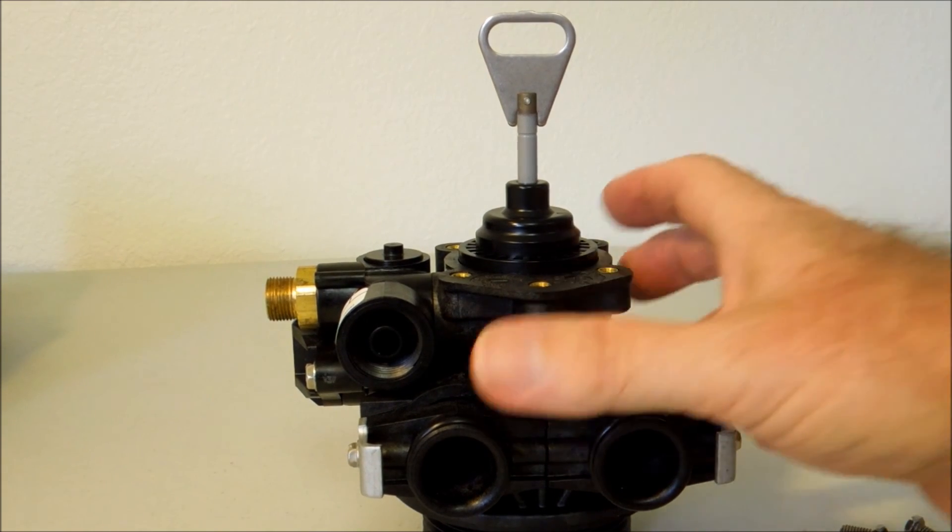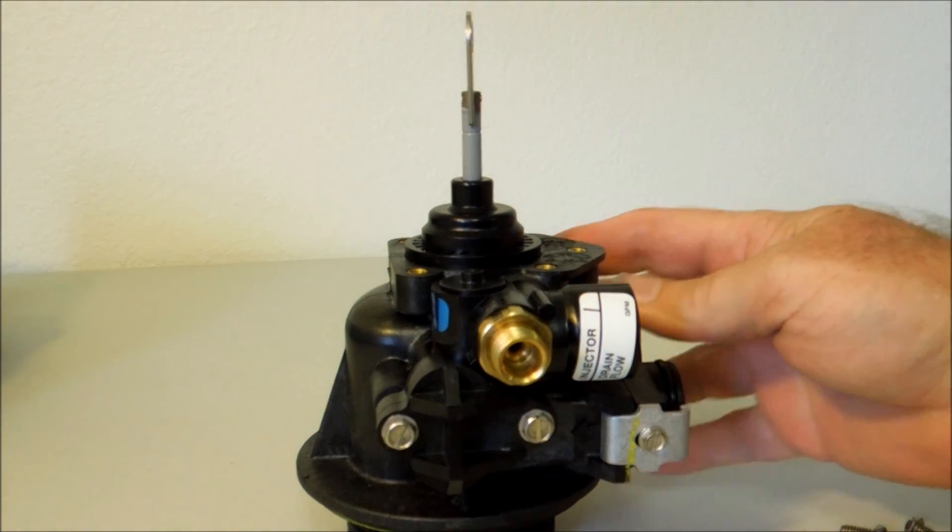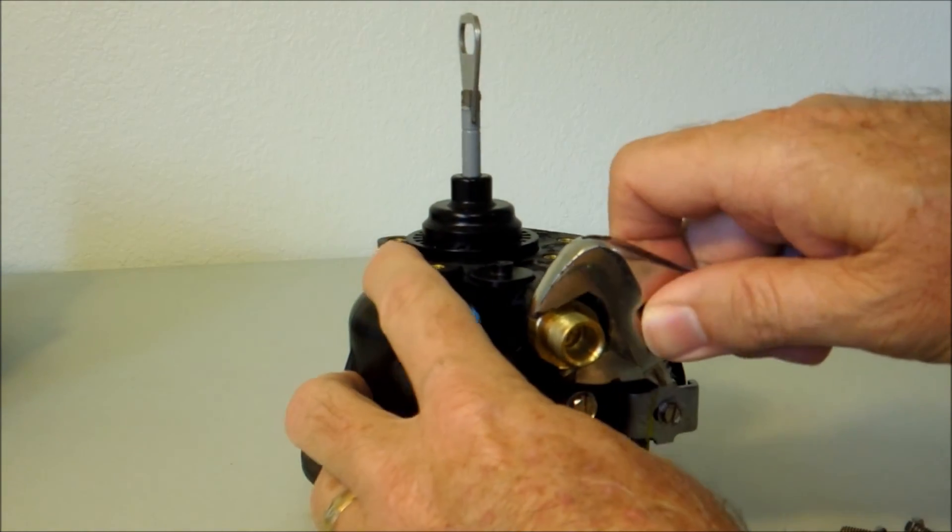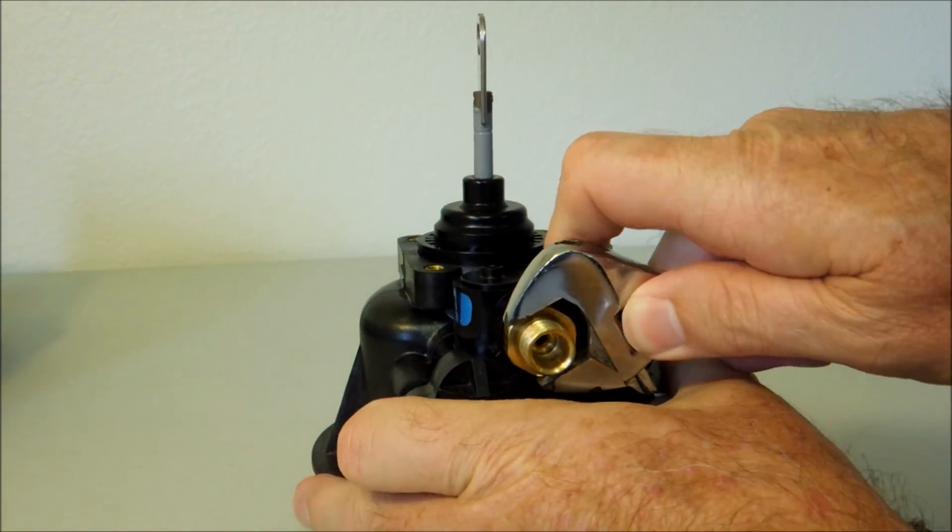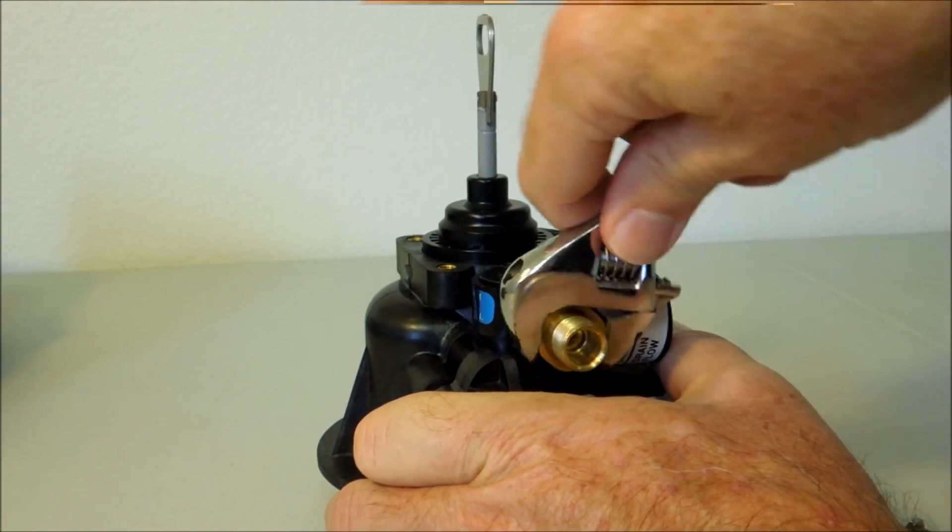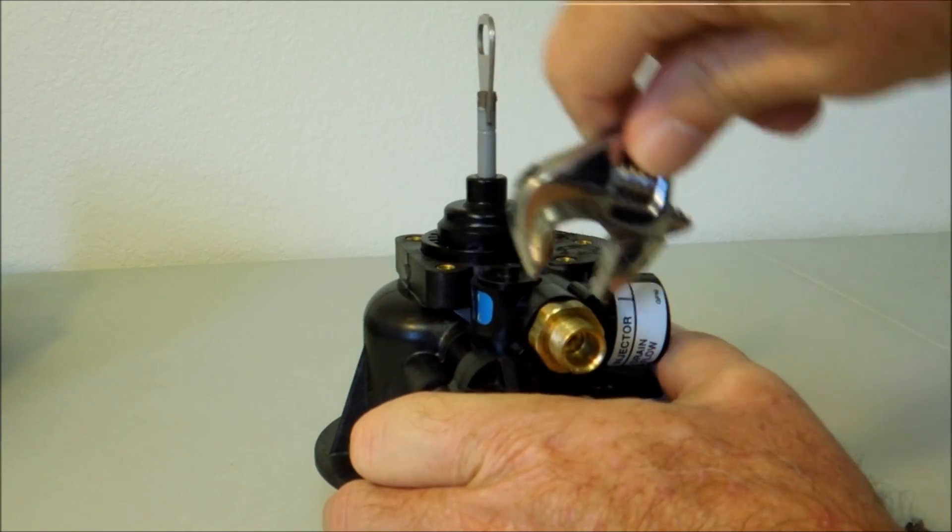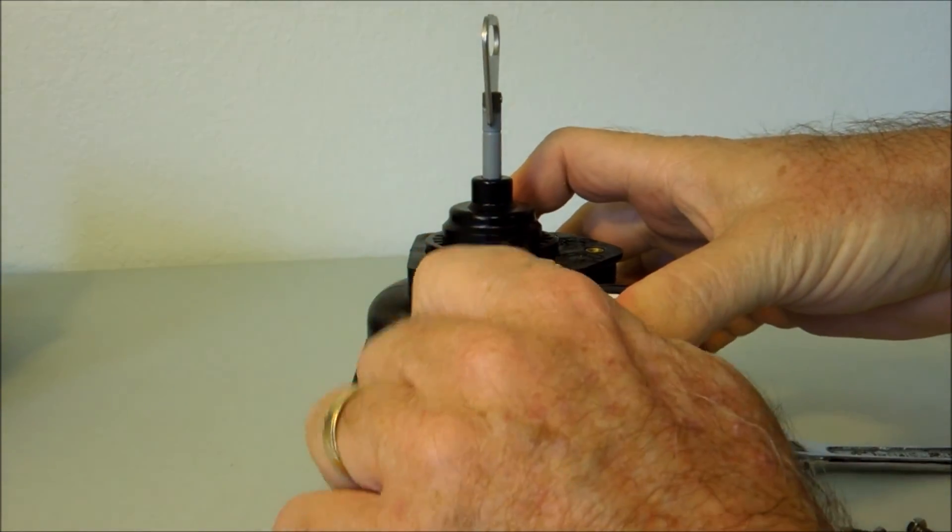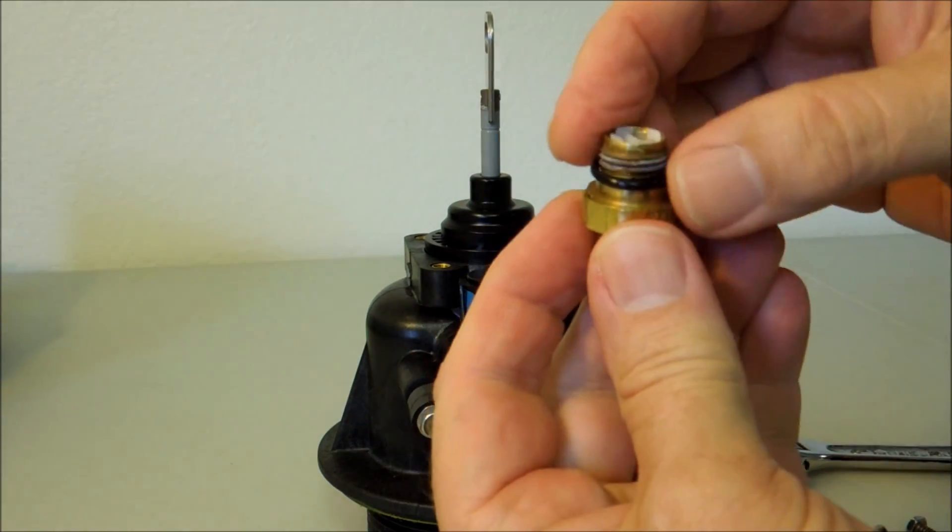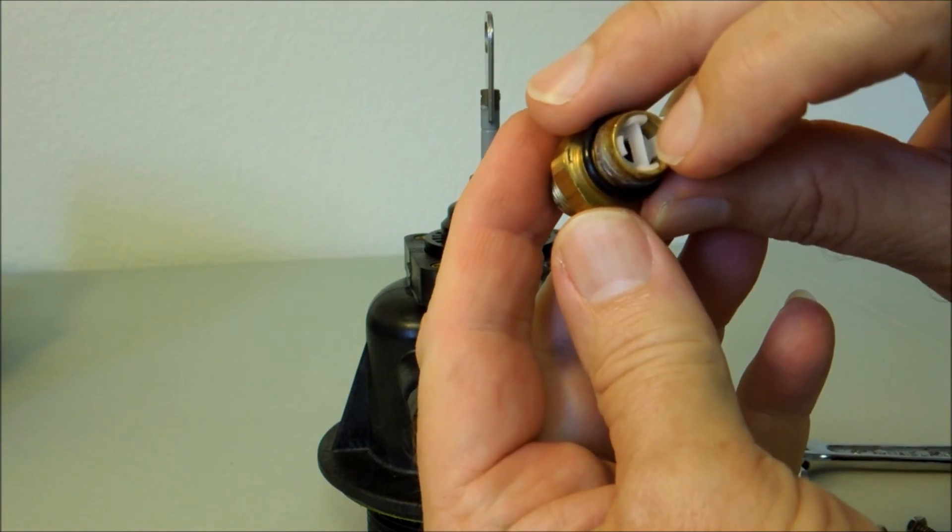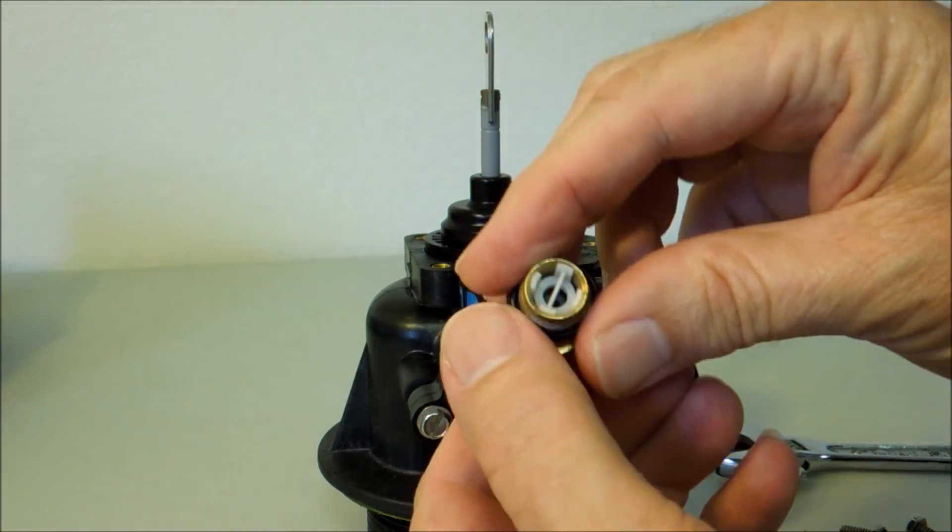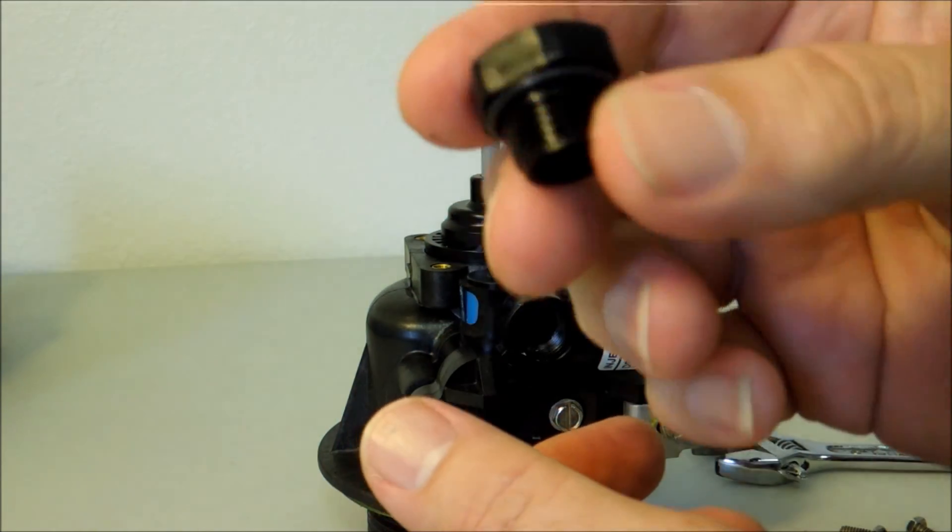Now we need to make several changes over here on the ejector drain module. With the power head off, it's really easy to get a crescent wrench on this brass fitting. This connects to the brine or salt line for the water softener. We're not going to be connecting to one, so we're going to take that out.